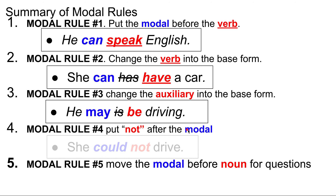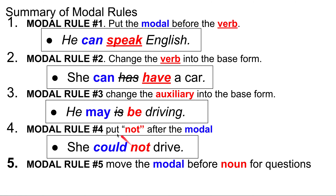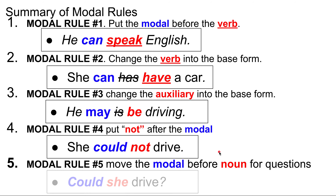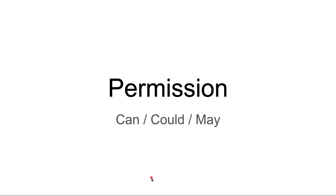Modal rule number four: add 'not' after the modal. For example, 'she could not drive' — the modal 'could' comes first, then the negation 'not.' Modal rule number five: move the modal before the noun for questions. For example, 'could she drive?'